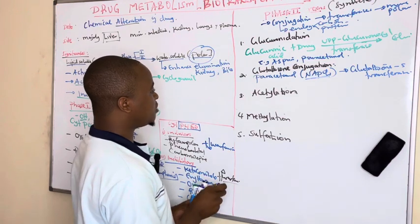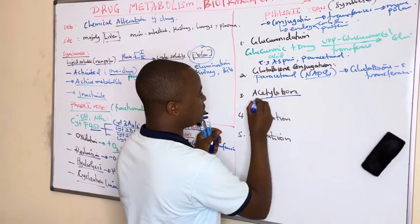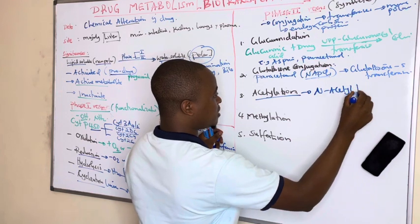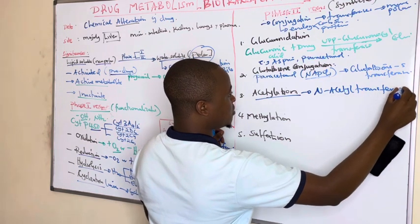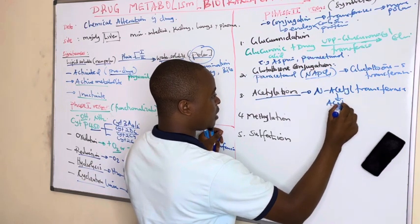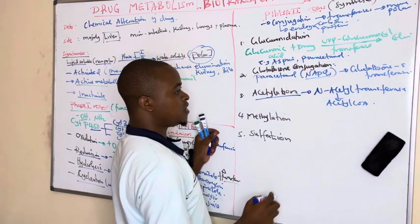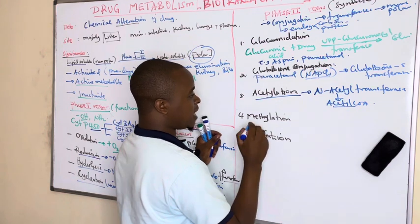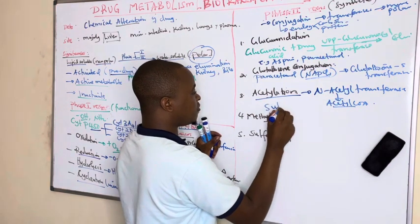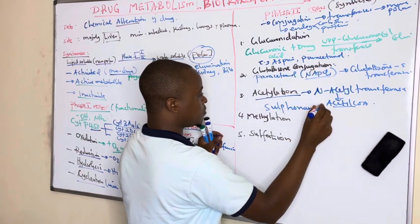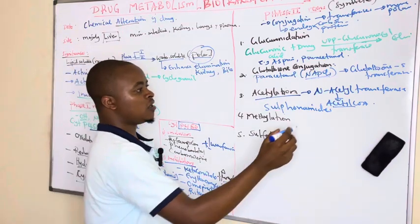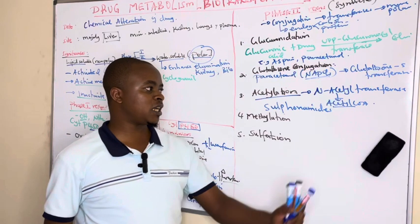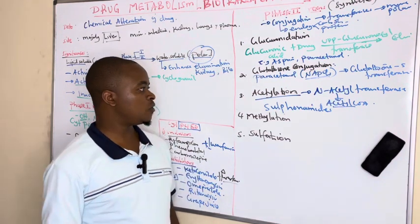Acetylation involves the enzyme N-acetyltransferase in the presence of the coenzyme acetyl-CoA, which donates an acetyl group to the drug to make it more polar. Drugs that undergo acetylation include sulfonamides.